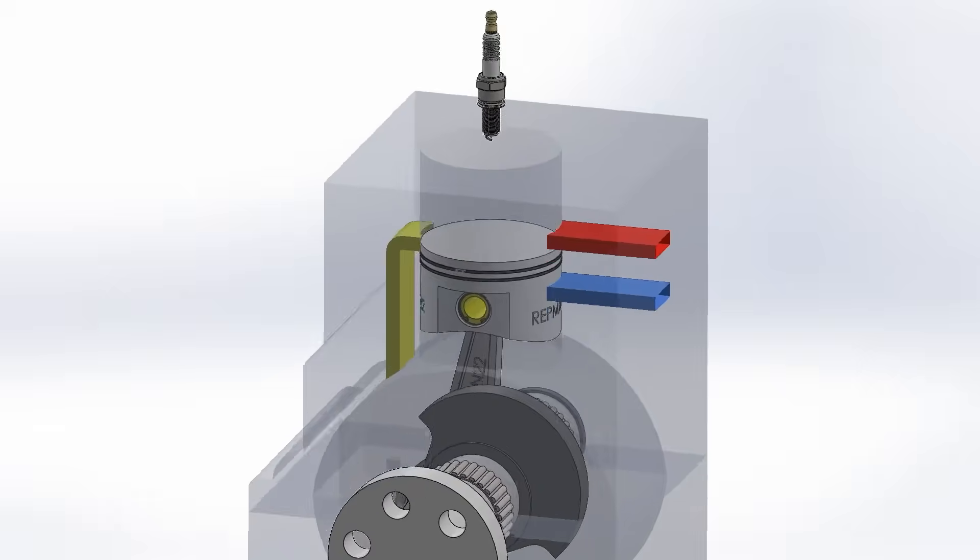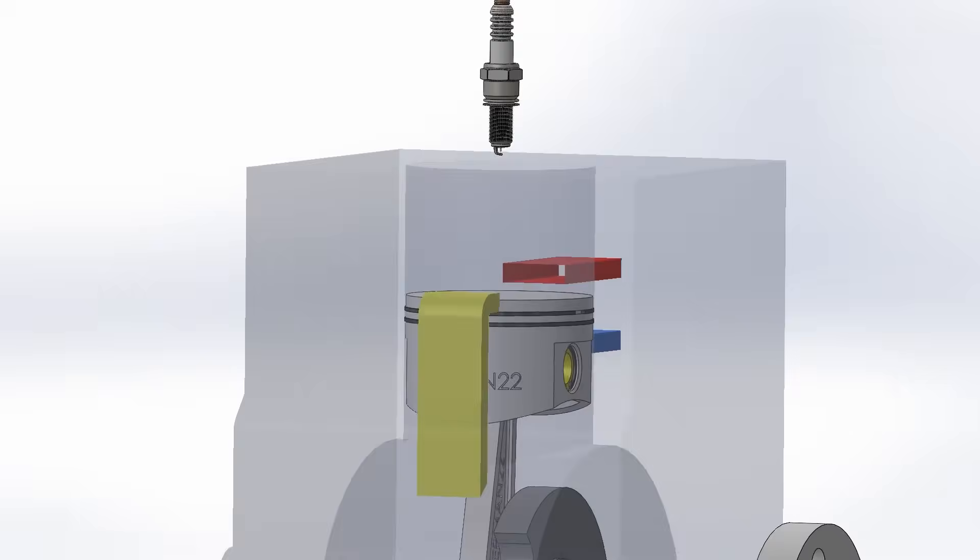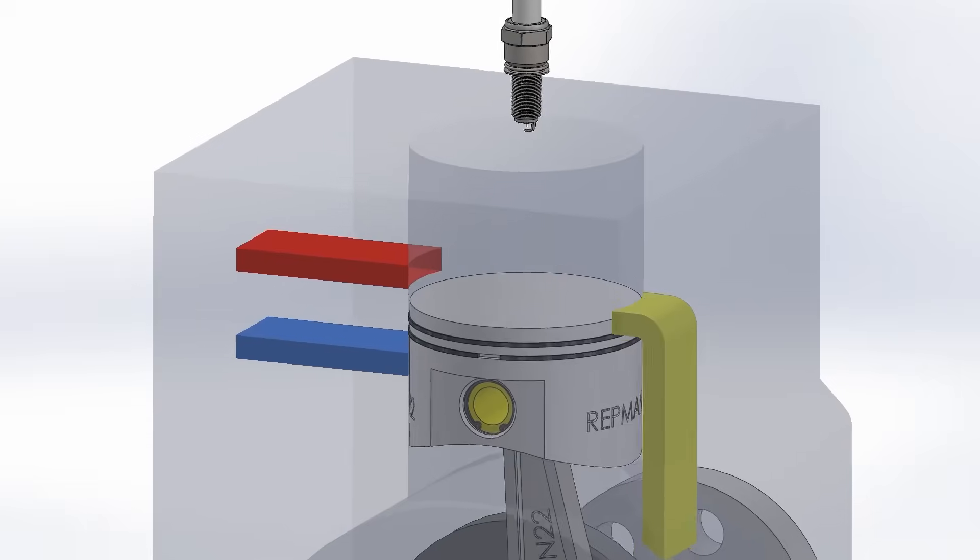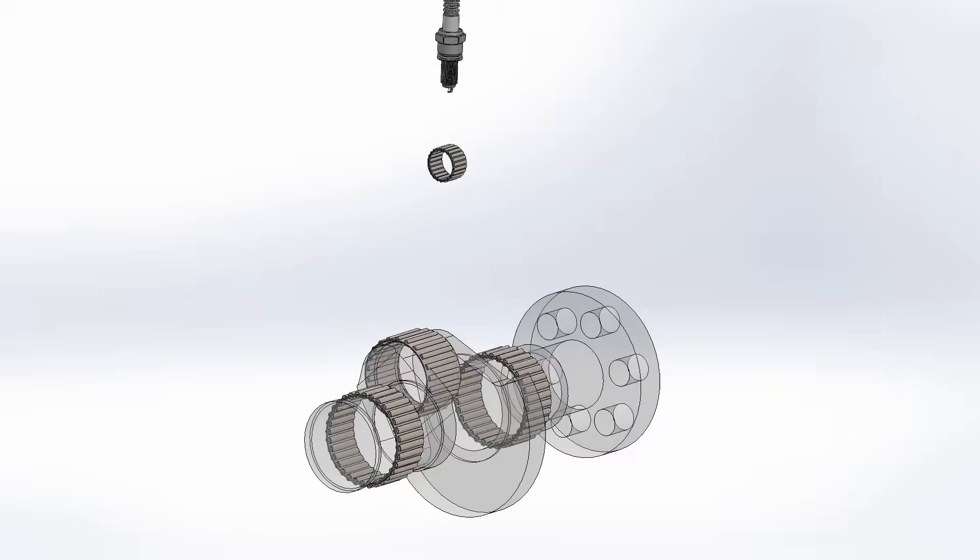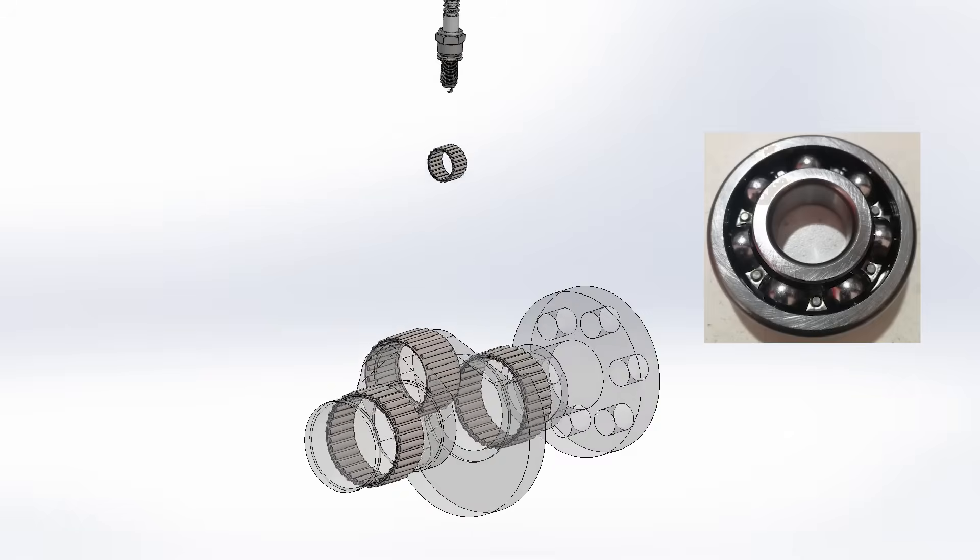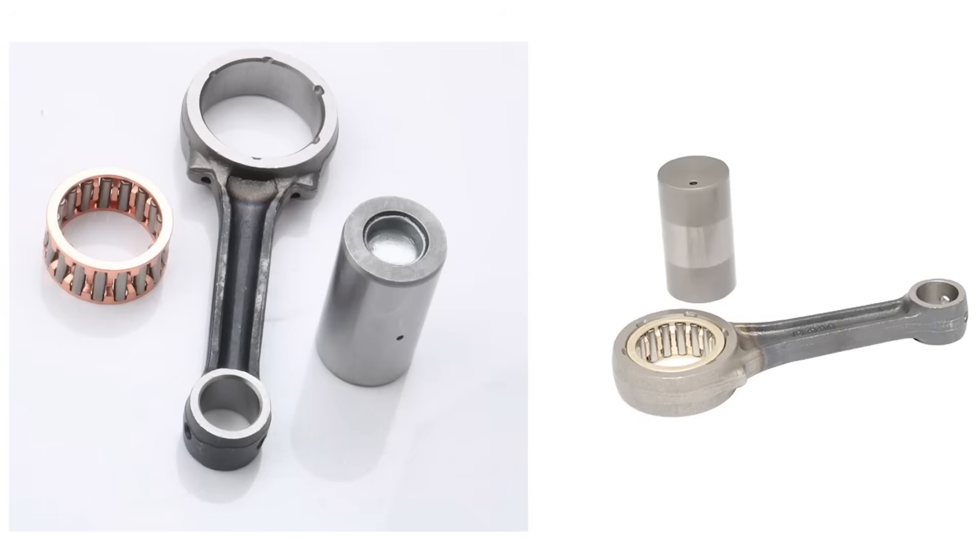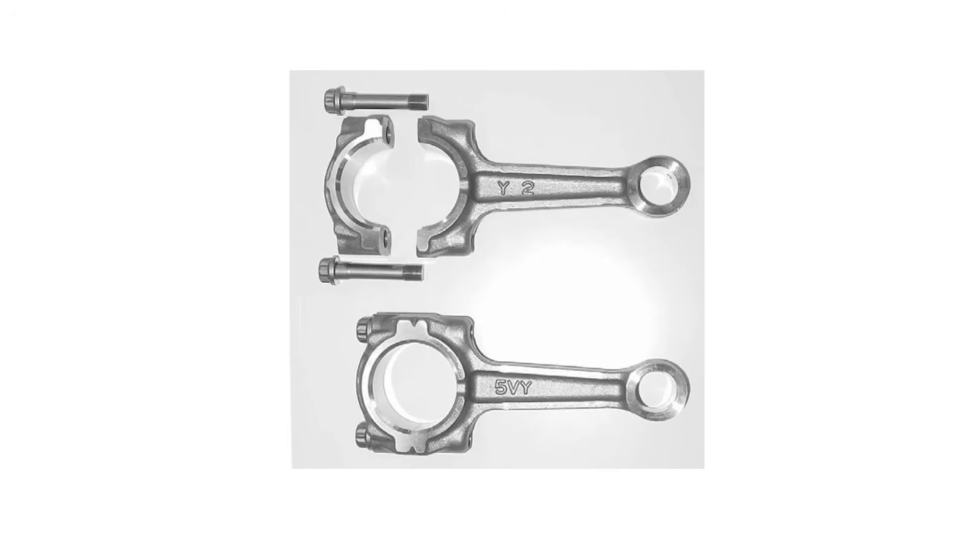Another thing you may notice is that it only has two rings instead of three. That's because the third oil scraper ring is not necessary. An extra difference that exists with a two-stroke engine is that bearings are used in the crankshaft, in the connecting rod, and in the pin, since the lubrication system is more precarious. Con rods are usually in one piece instead of two, as in a four-stroke engine.